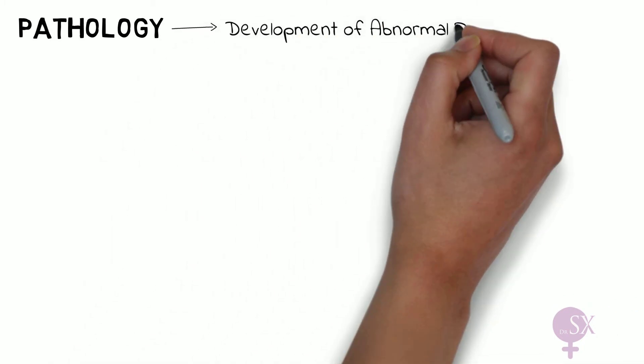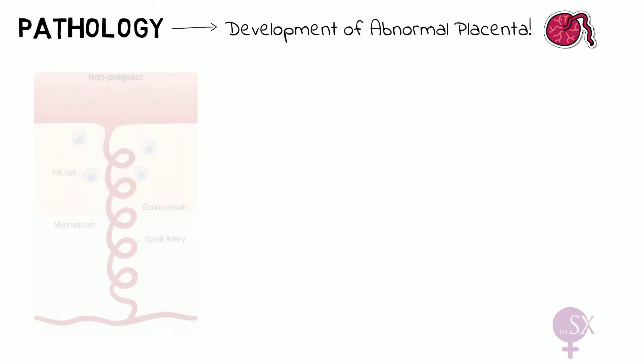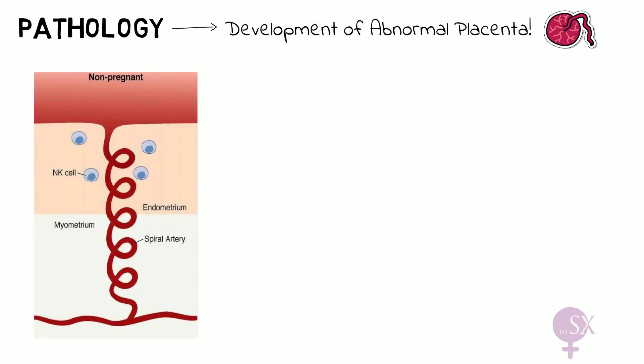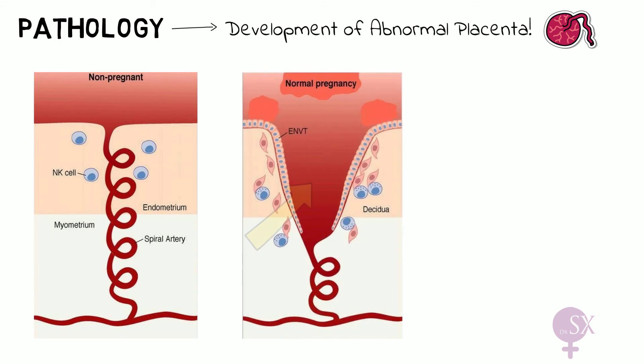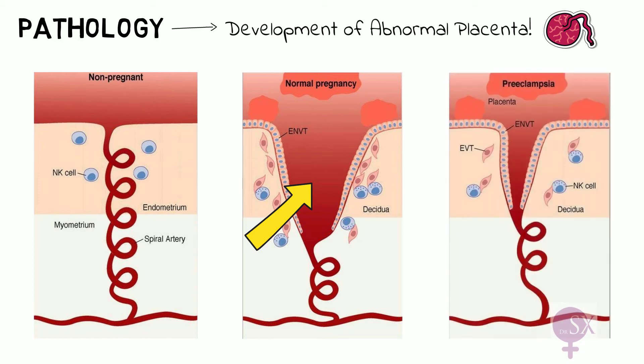The exact cause of preeclampsia is still unclear, but it is secondary to the development of an abnormal placenta — specifically abnormal development of the spiral arteries of the placenta. In a normal pregnancy the spiral arteries dilate to five times their original size, allowing more blood flow in the placental bed and delivering more oxygen and nutrients to the developing fetus. However, in preeclampsia the spiral arteries become fibrous and do not dilate adequately, resulting in a poorly perfused placenta.